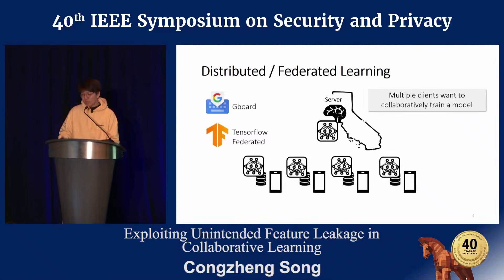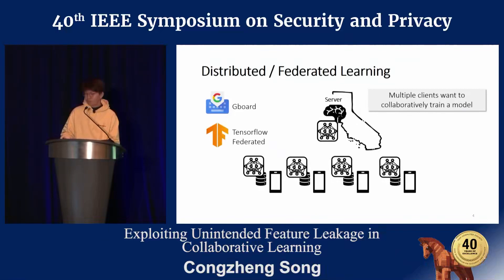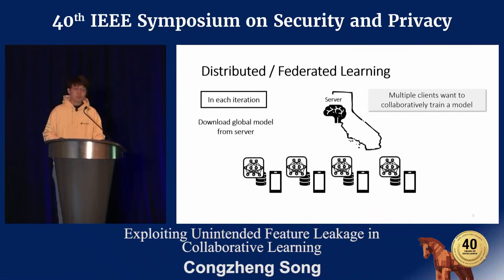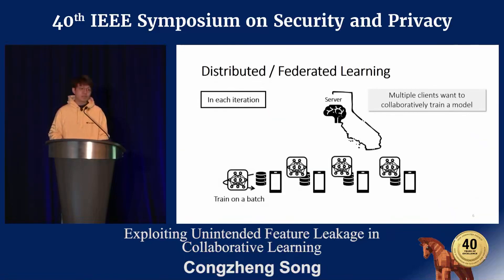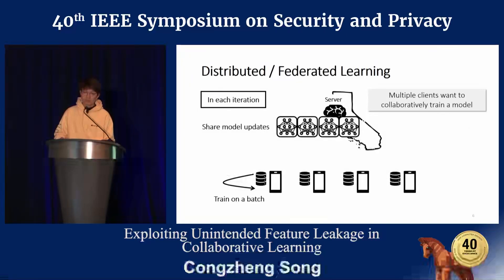In this framework, clients train the model with a central server such as Google, and each client can keep their data locally on their own devices. The data are never shared to the server and are not shared between participants. In each iteration, each client first downloads the global model from the central server, computes gradient updates locally on a batch of training data, and then sends these gradient updates back to the server. The server aggregates these updates and produces a new version of the global model.